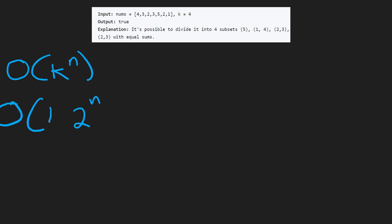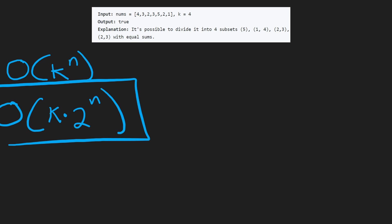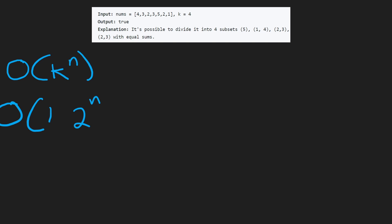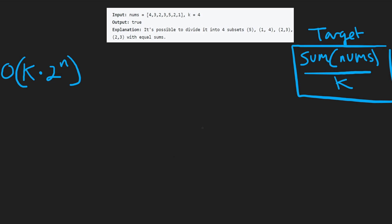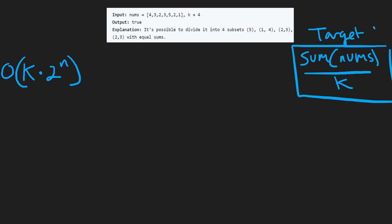So this is a much more efficient solution. There's actually one more constant in it — k times 2 to the power of n. Let me explain this solution and how we can code it up as well. The idea is pretty similar because we are going to have the same target value — the sum of the nums divided by k.